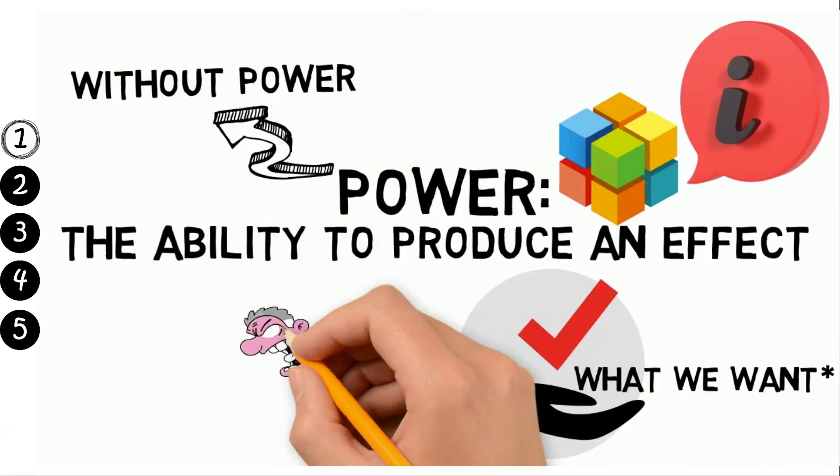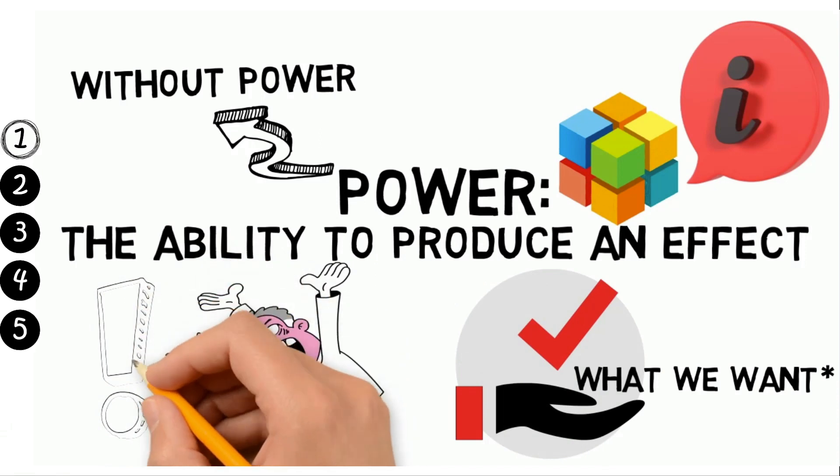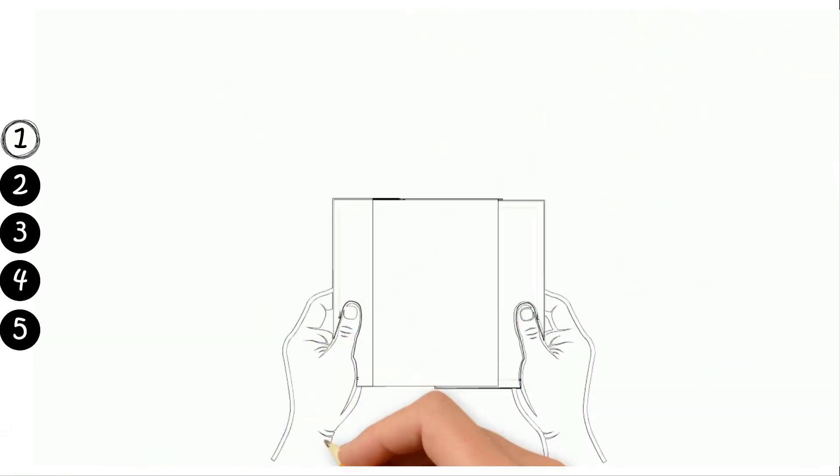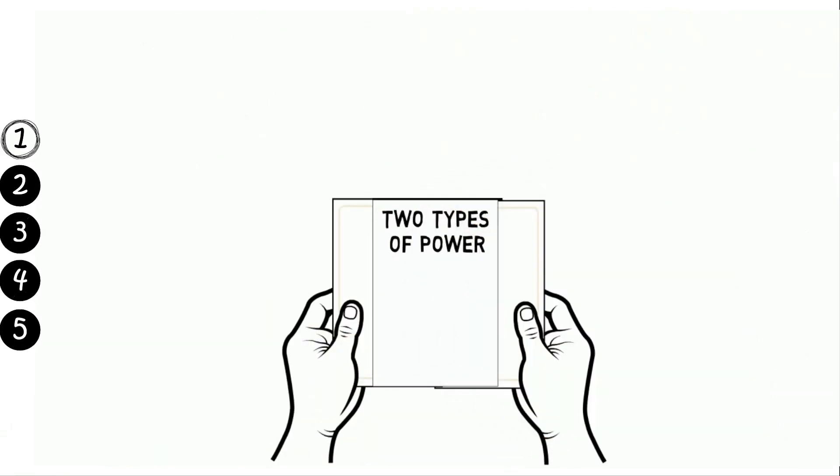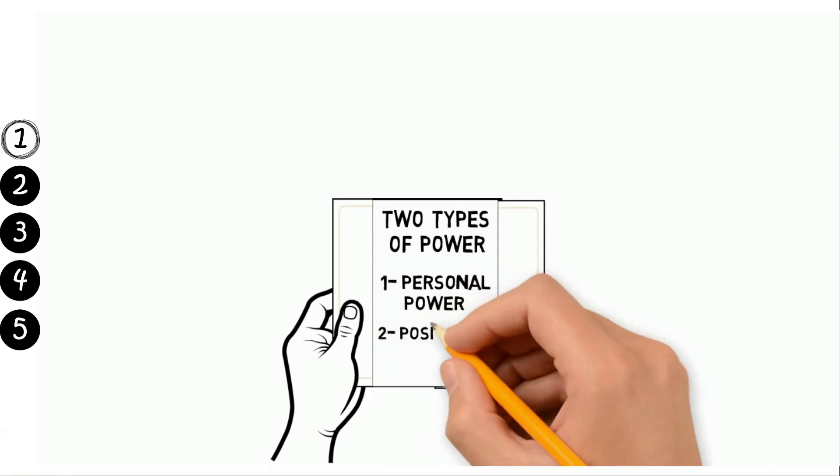Without power, we are at the mercy of those who have it. Tony Robbins goes on to say that there are two types of power: personal power and positional power.